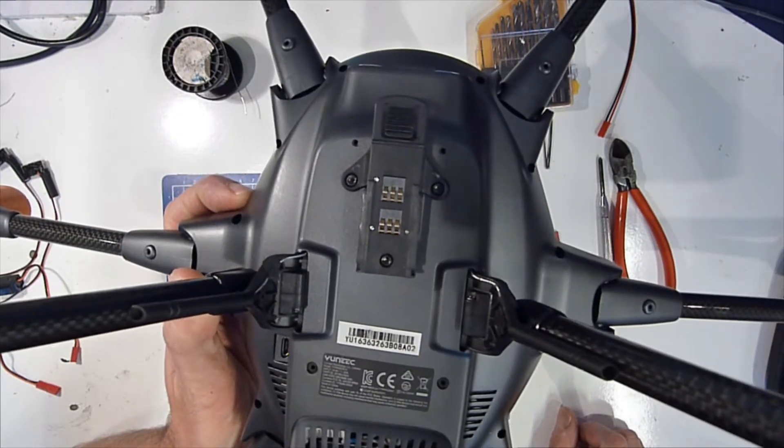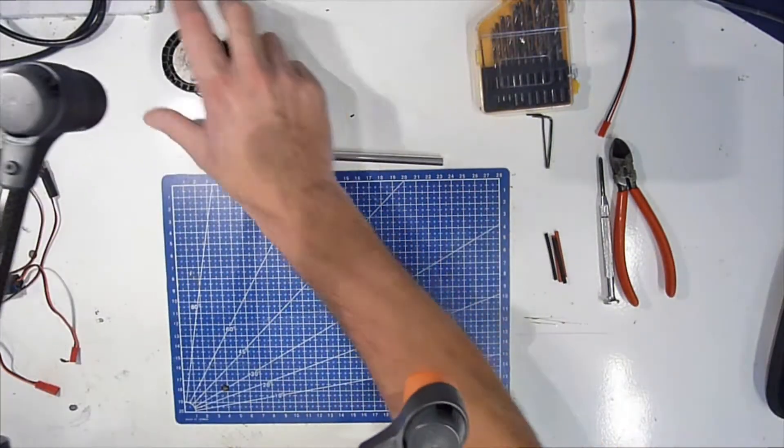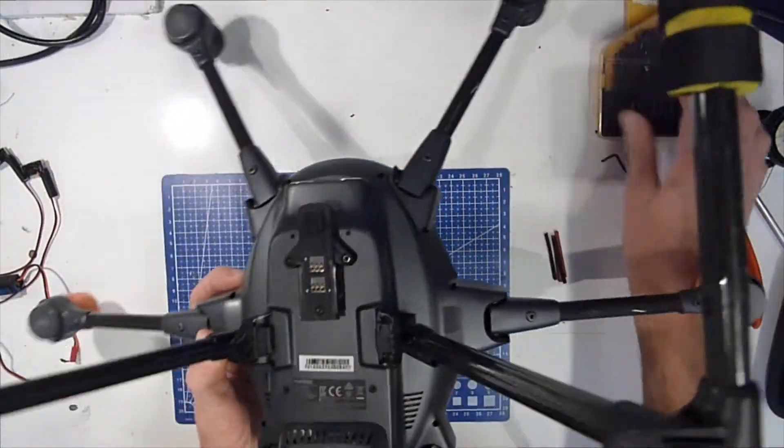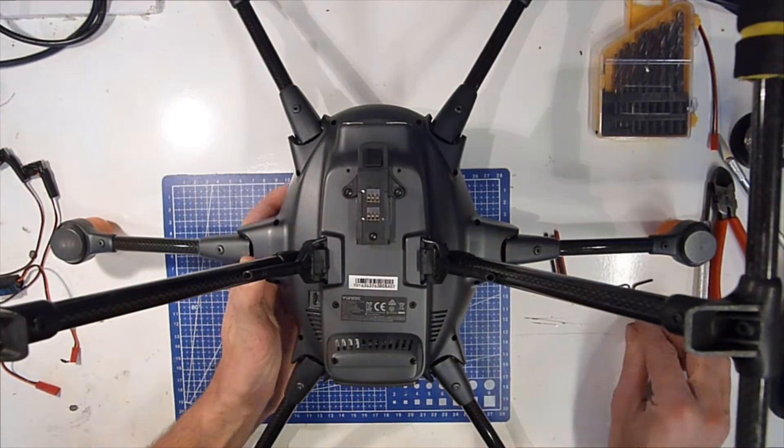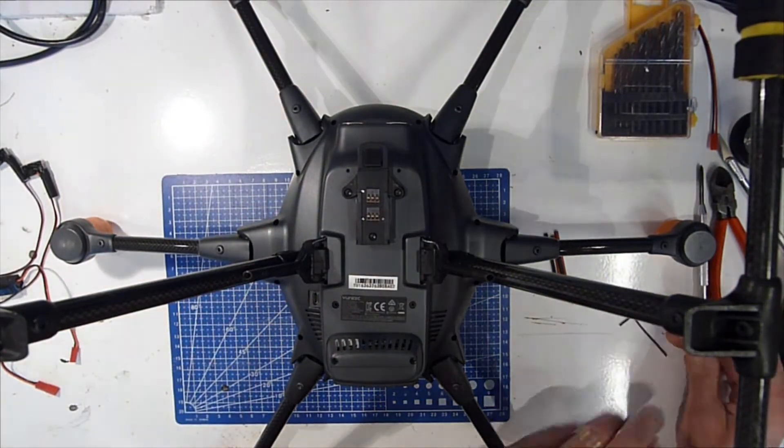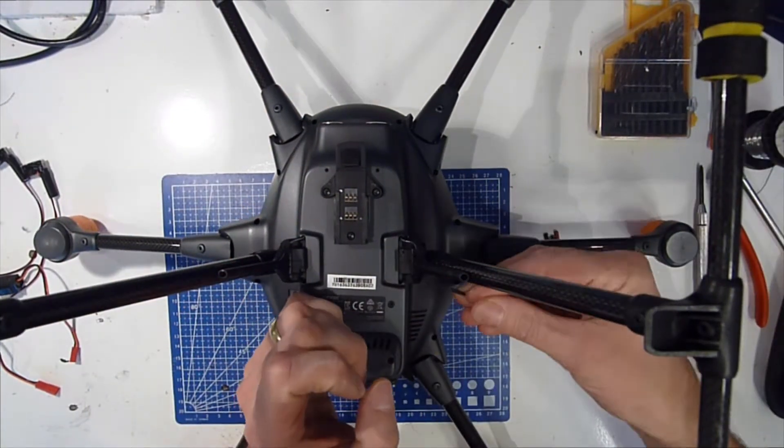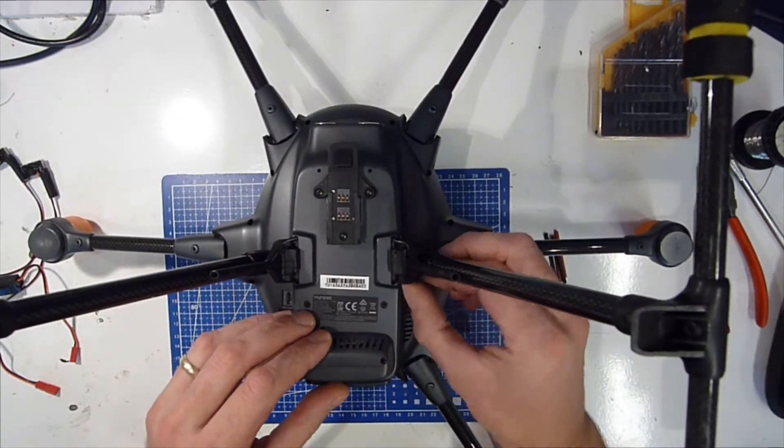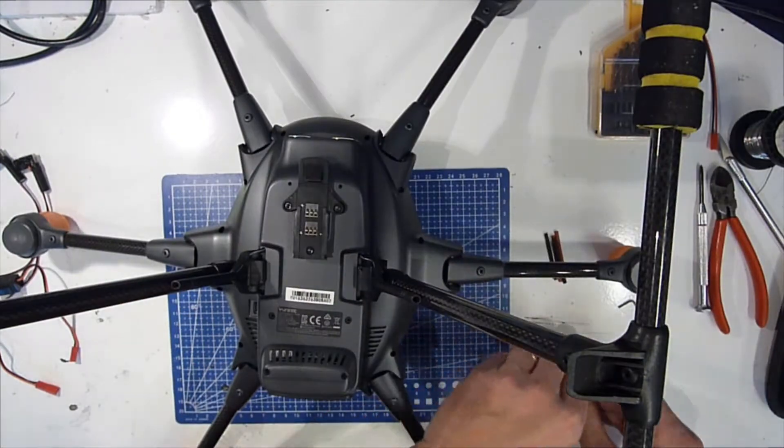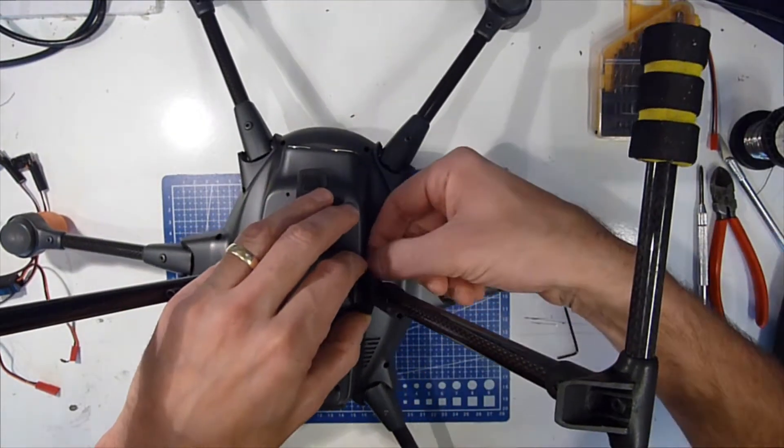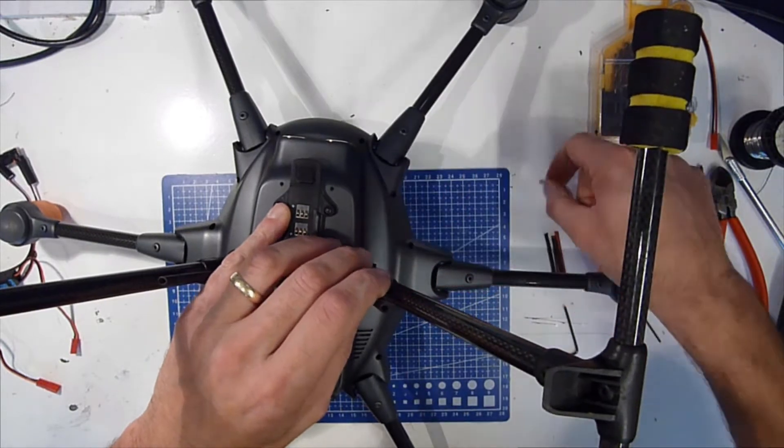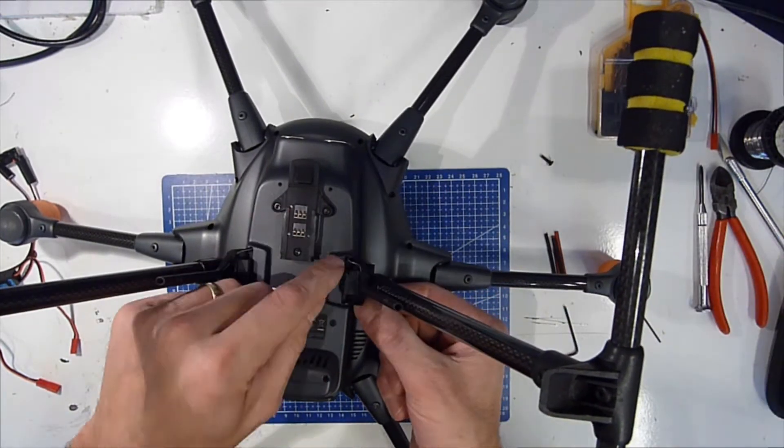Let's make some room. First thing we do is take off the landing gear. A two millimeter allen key is used to take off the screws. Now when you remove this, always be careful because the antennas that go inside the frame are very fragile.